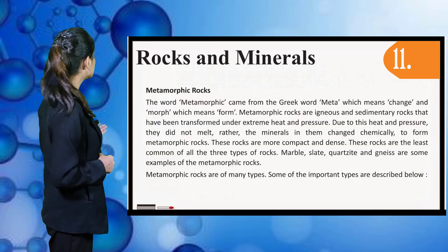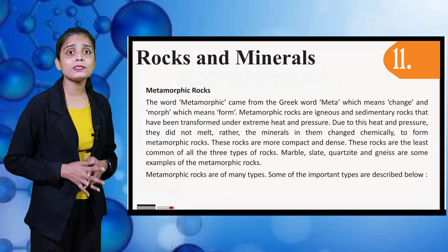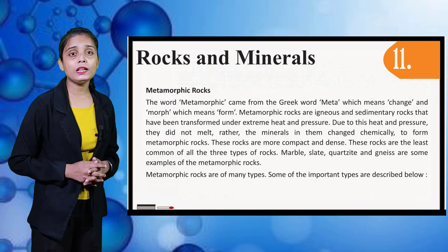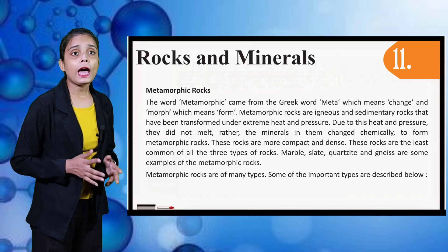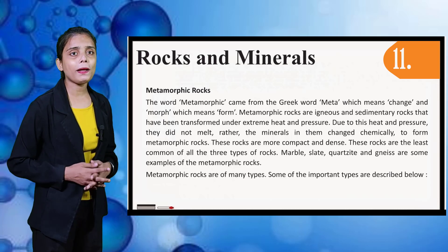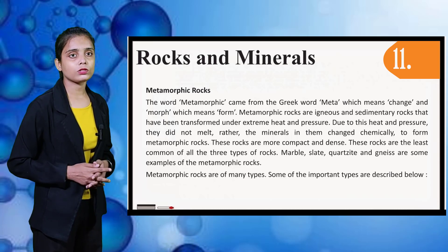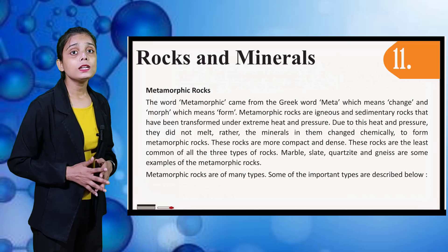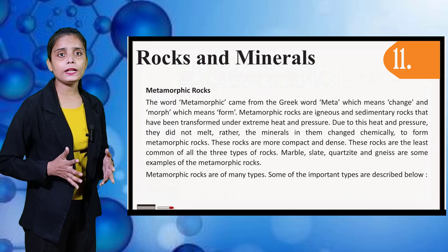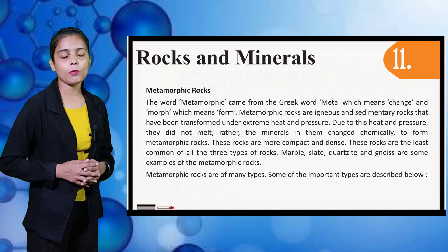Now let's see the next type of rock, that is Metamorphic Rocks. The word metamorphic comes from the Greek words meta, meaning change, and morph, meaning form. Metamorphic rocks are igneous and sedimentary rocks that have been transformed under extreme heat and pressure. Due to this heat and pressure, they did not melt; rather, the minerals in them changed chemically to form metamorphic rocks. These rocks are more compact and dense, and are the least common of the three types. Marble, slate, quartzite, and gneiss are some examples of metamorphic rocks.